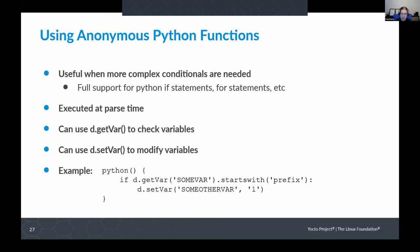If you have more complicated needs for conditionals, you can use anonymous Python functions. These are Python functions that go in a recipe, configuration file, or class and are evaluated at parse time. You've got full support for Python if statements, for loops, and everything else. You can use d.getVar() to check the value of a variable and d.setVar() to modify variables. If you've got something more complicated than you can do in a one-liner, this is a nice way to support that. Use them sparingly, but they are useful for more complicated conditionals. Lean on these rather than hard-coding things in bbappends.